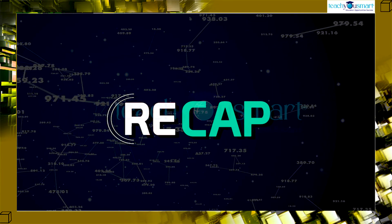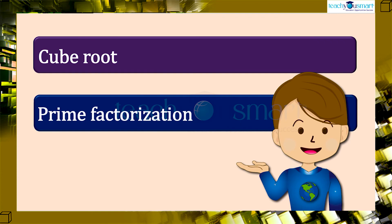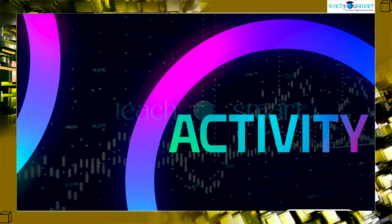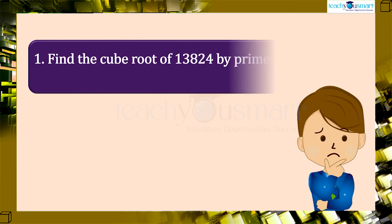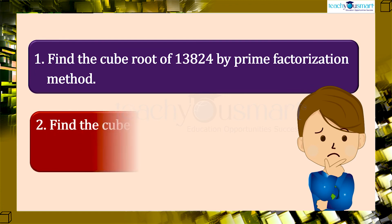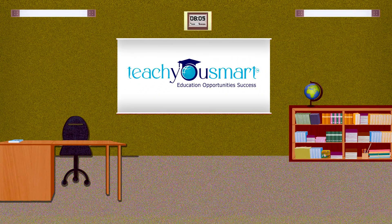Let's have a quick recap. Today, we discussed finding the cube root of a given number through the prime factorization method and the estimation method. Before winding up, here is an activity for you: find the cube root of 13,824 by the prime factorization method, and find the cube root of 8,57,375 by the estimation method. That's all about cubes and cube roots. See you all in the next class with another interesting chapter.